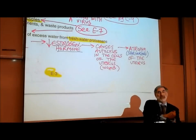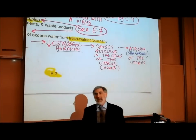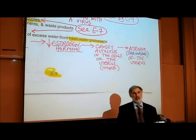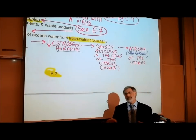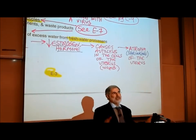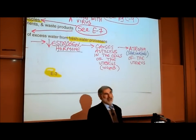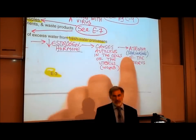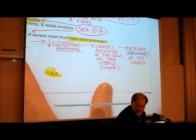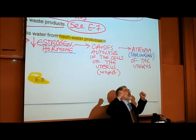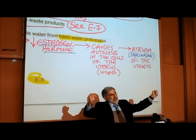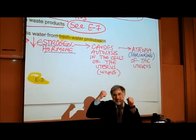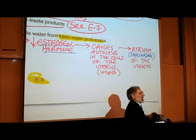The uterus shrinks because a woman is not going to carry a child since her ovaries don't work anymore. Most women don't care much that their uterus is shrinking — some are almost relieved they no longer have to deal with menstrual periods. If you don't use your muscles, they atrophy or shrink — same concept applies here to the uterus.